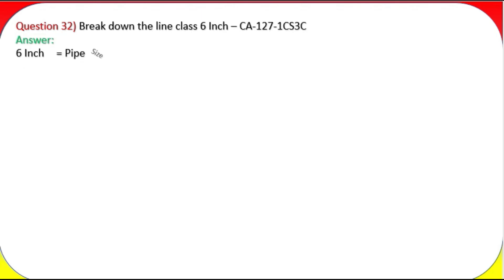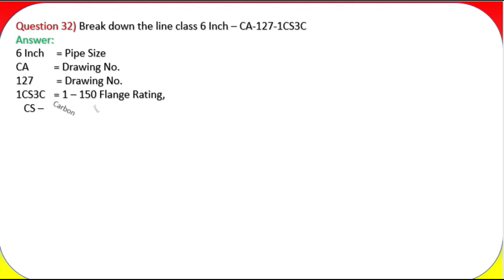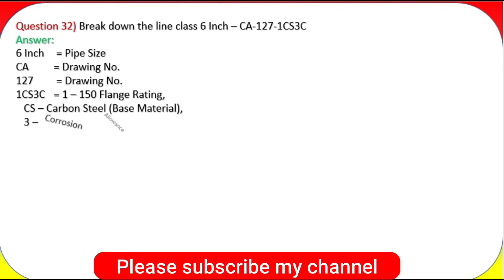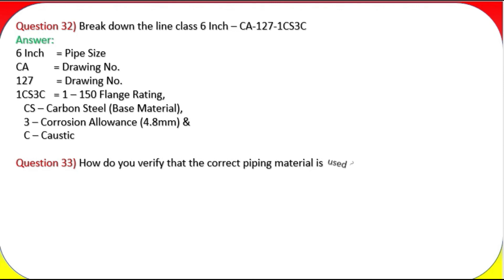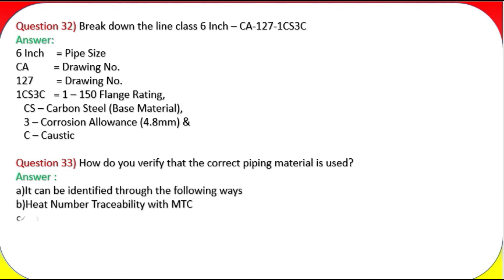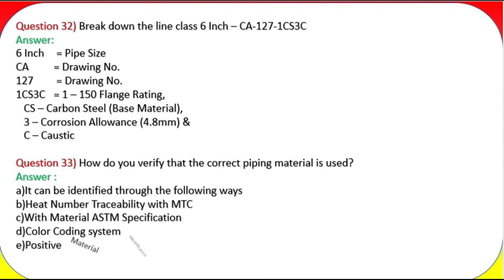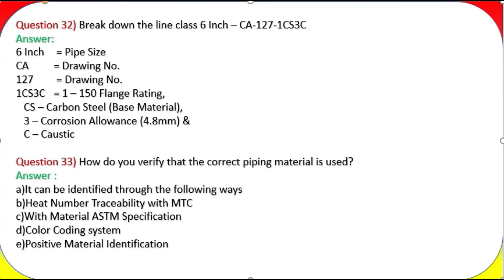Question 32: Break down the line class: 6-inch CA127-1CS3C. Answer: 6 inch = pipe size; CA = drawing number prefix; 127 = drawing number; 1 = 150# flange rating (Class 150); CS = carbon steel base material; 3 = corrosion allowance 4.8 mm; C = caustic service.